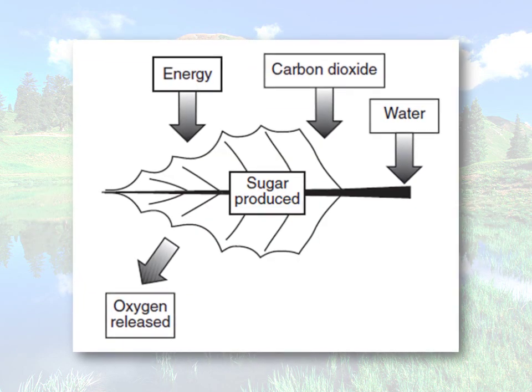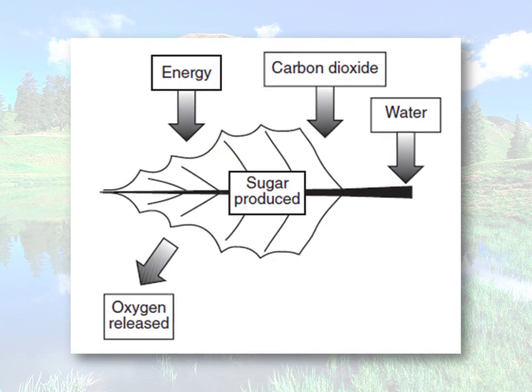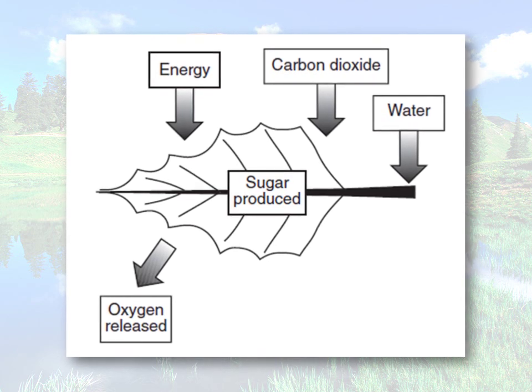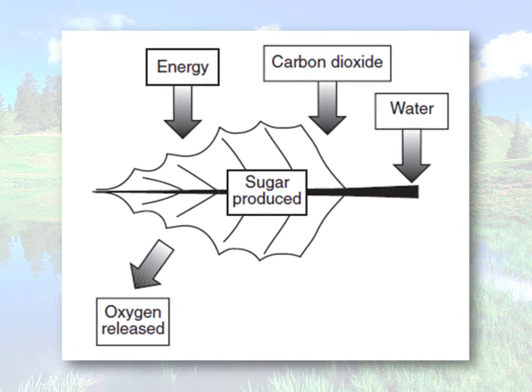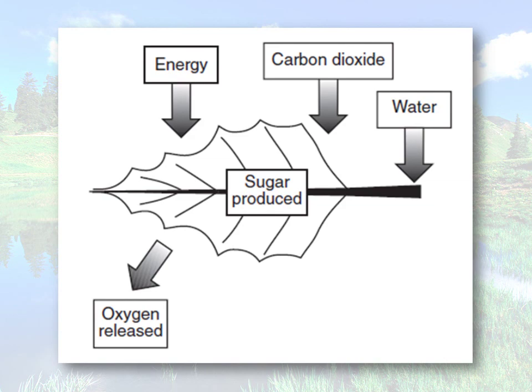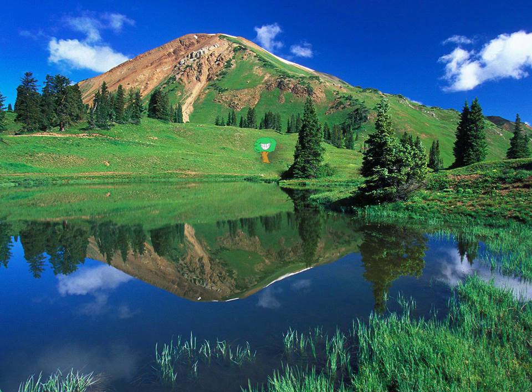To sum it up, we can observe this photograph. Energy from the sun goes into the leaf along with carbon dioxide and water. Sugar is produced and oxygen is released. So next time you're in the woods, take a look at all those plants and just think about every plant and what it needs to do to grow.